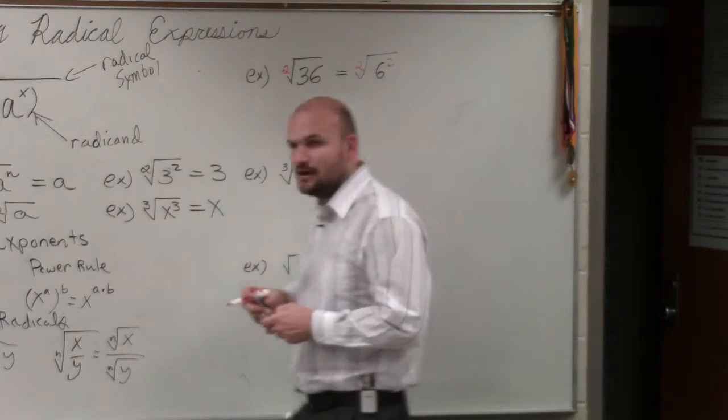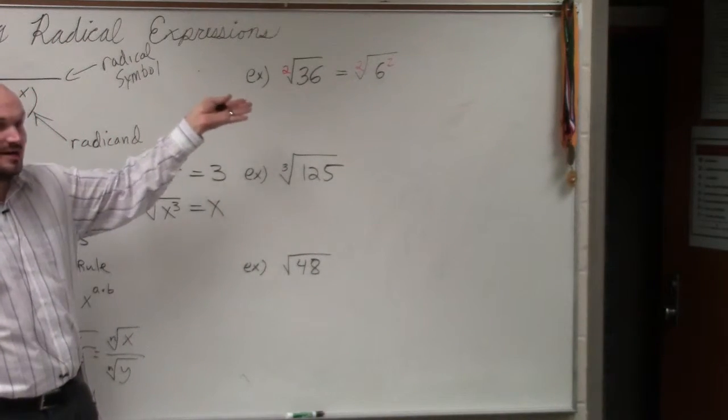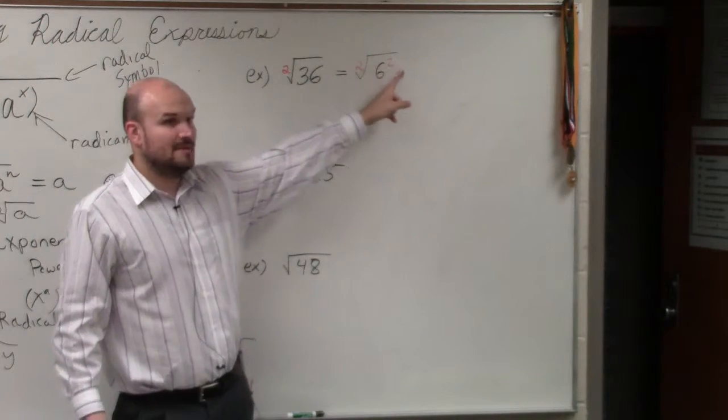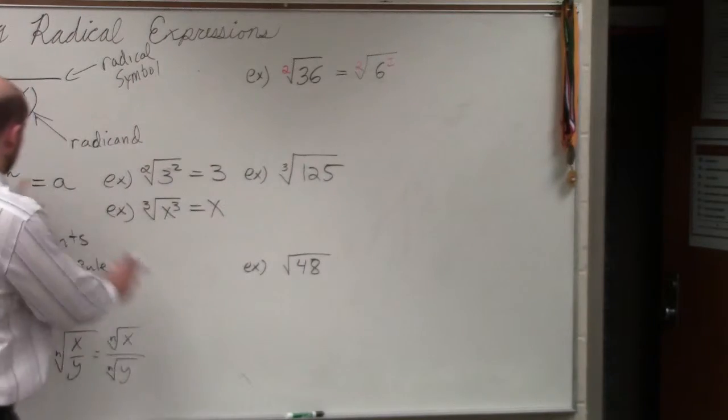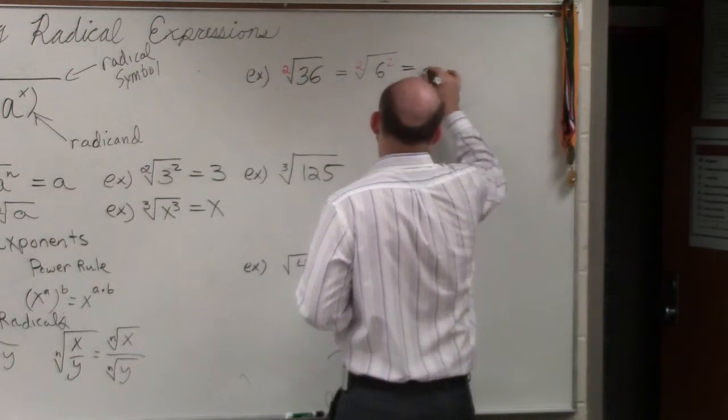So do you guys see how, when I write this with that index, I can see that 6 squared is 36. But if I rewrite that as 6 to the 2, the index and my power are exactly the same. So therefore, I know the answer is going to be 6.